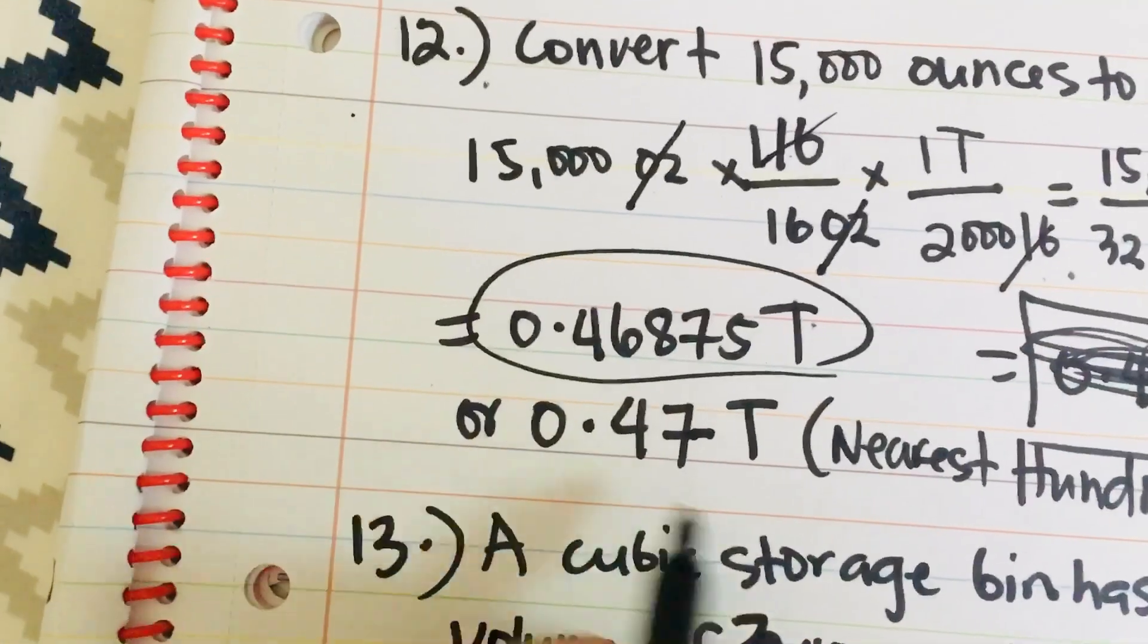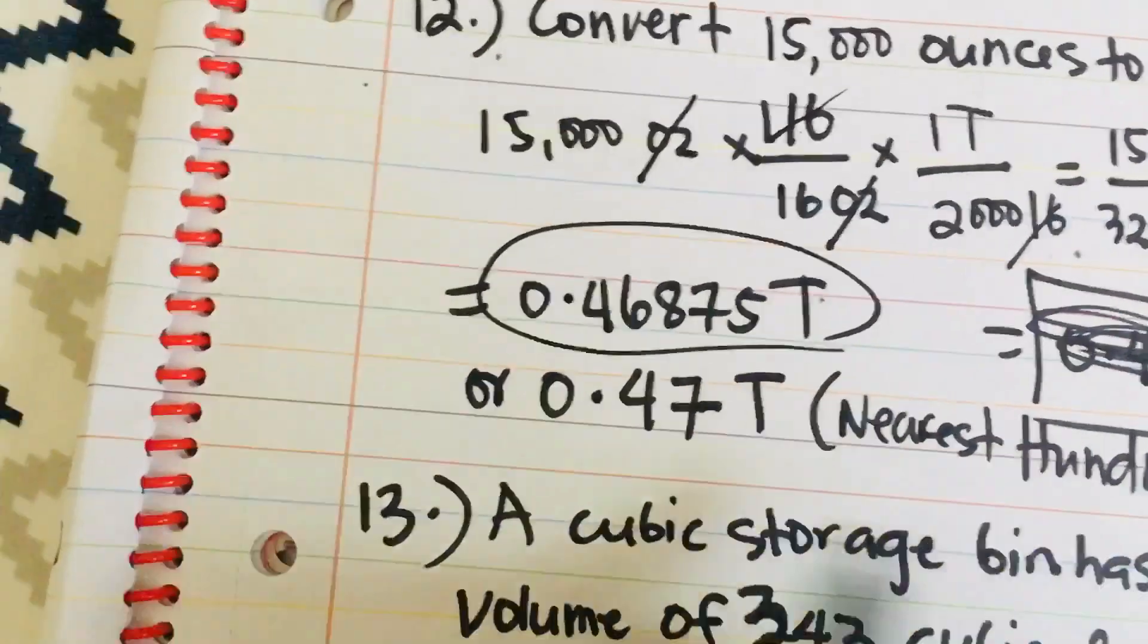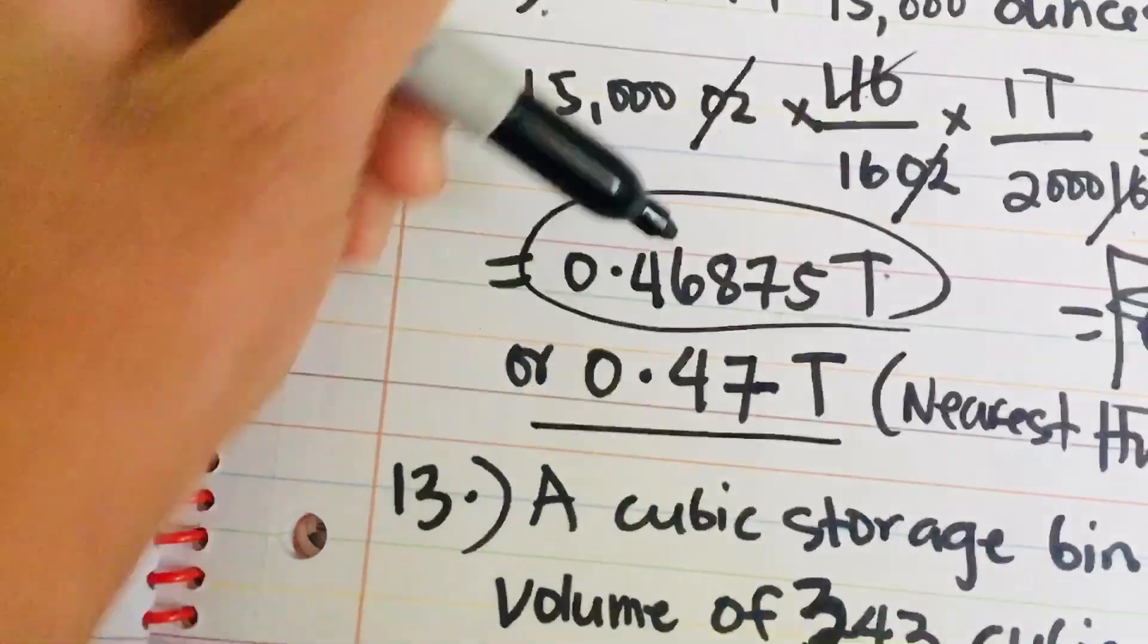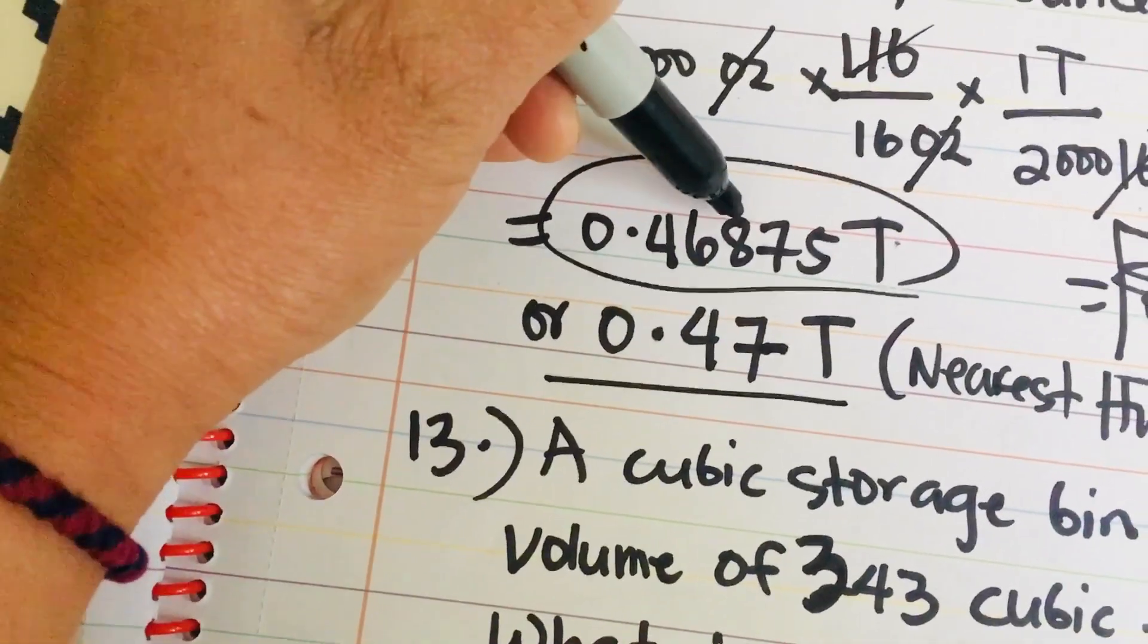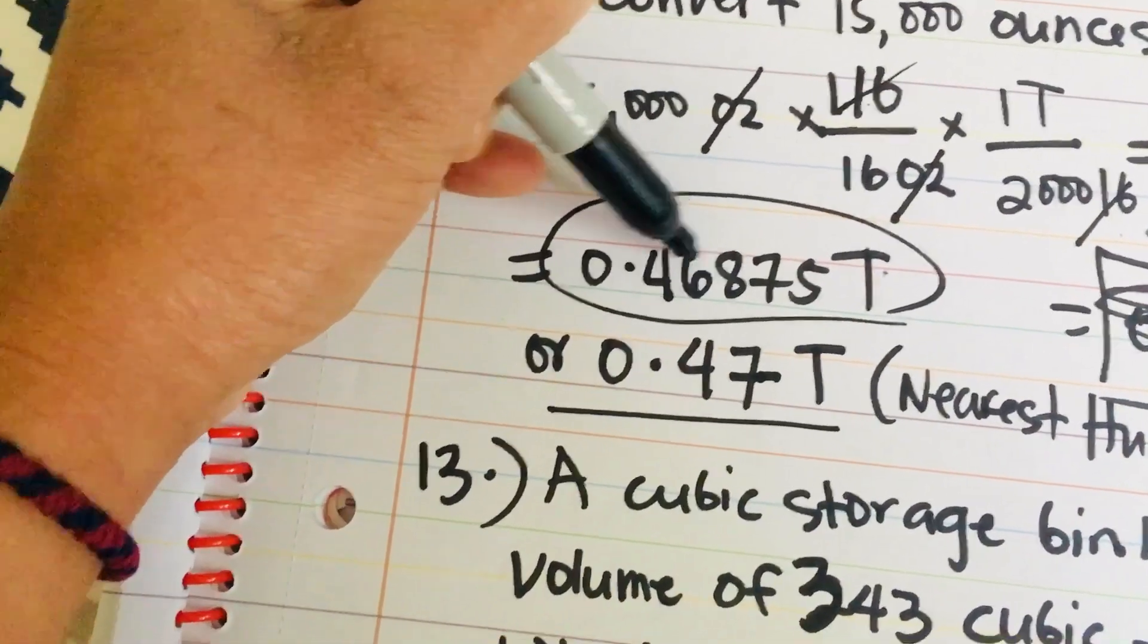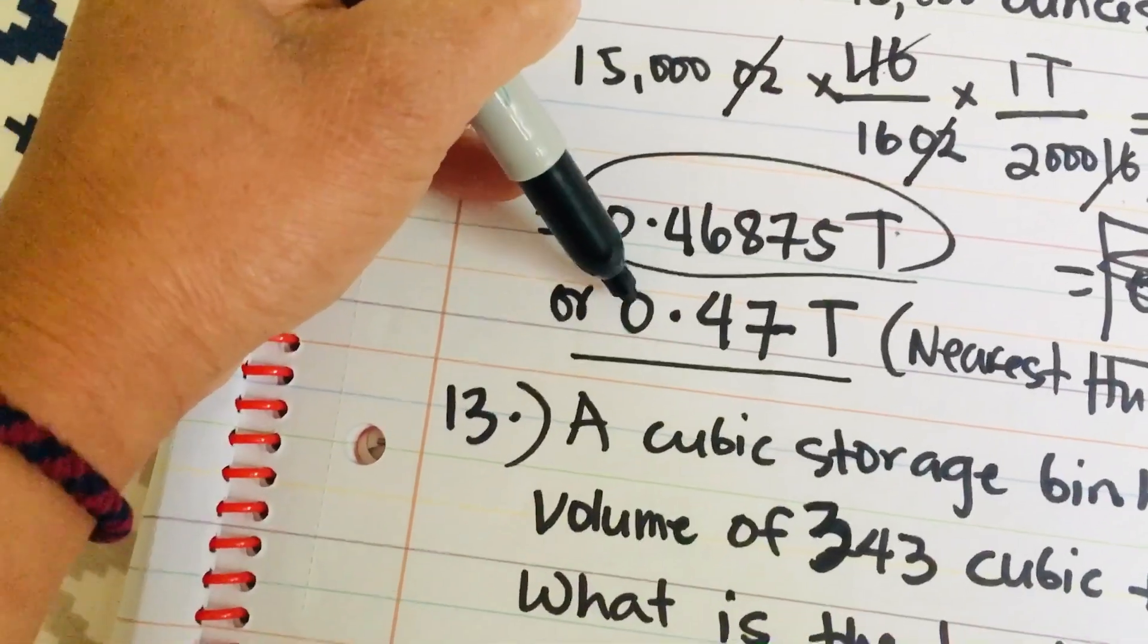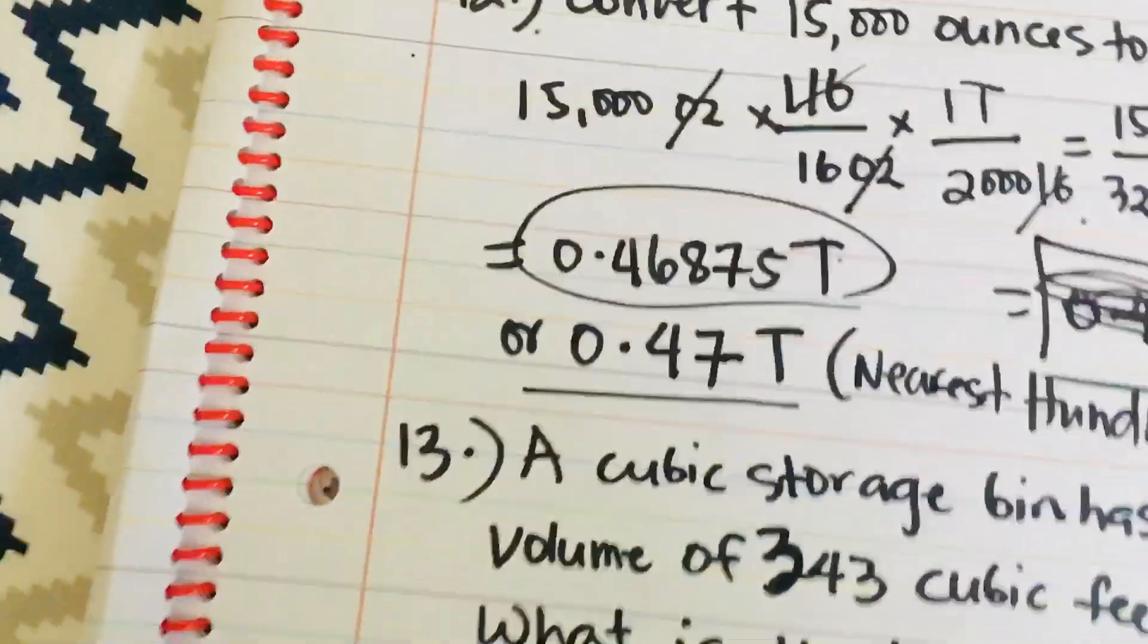0.146875 ton. So, usually they would tell you round it off to nearest hundredth. So, just two digits. So, 6 and 8. 8 is more than 5. So, you have to add 1 to this one. So, the answer is 0.47 ton.